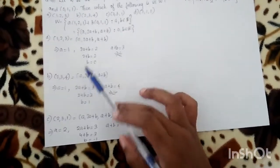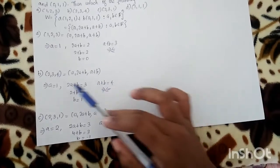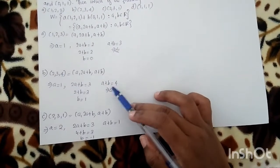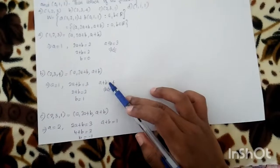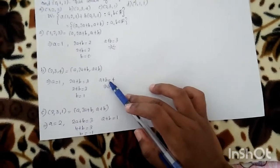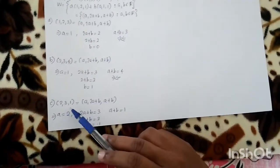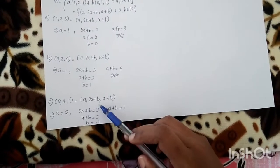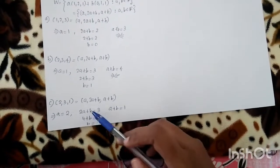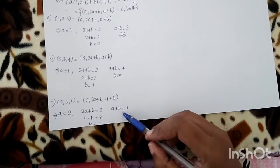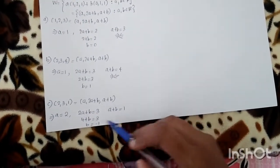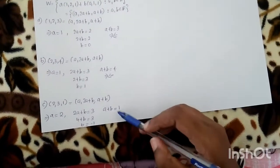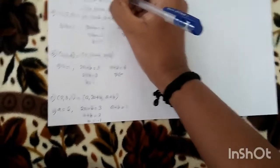Next, for option B: A+B=4, which also fails. Next, option C: (2,3,1). We check A=2, 2A+B=3, A+B=1. Solving: B=-1, and A+B = 2+(-1)=1. So A+B equals 1, which satisfies the condition.